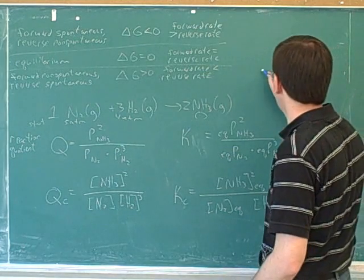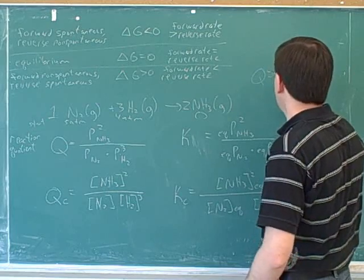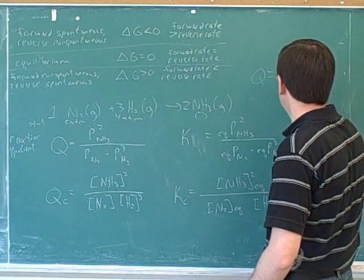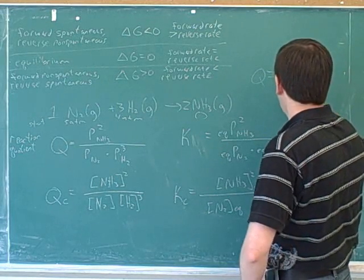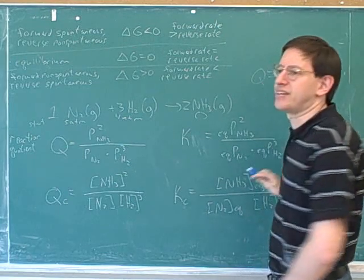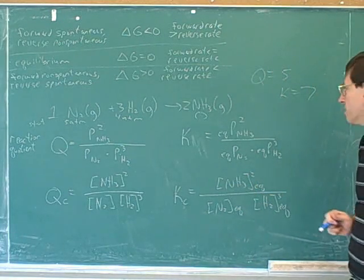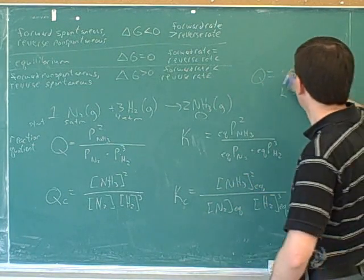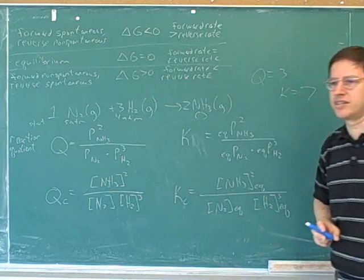Maybe you should use some numbers. So let's say Q, I'm just going to make up some numbers. Let's say that Q is 5 and K is 7. I'm just making it easy to use numbers, not realistic numbers. Say Q is 3 and K is 7.